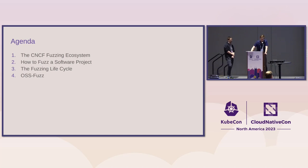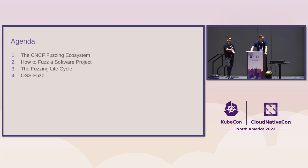And then the fuzzing lifecycle — so what happens when you have written a fuzzer? What do you do and how do you do it efficiently? And OSS-Fuzz finally, which is a big part of the fuzzing lifecycle.